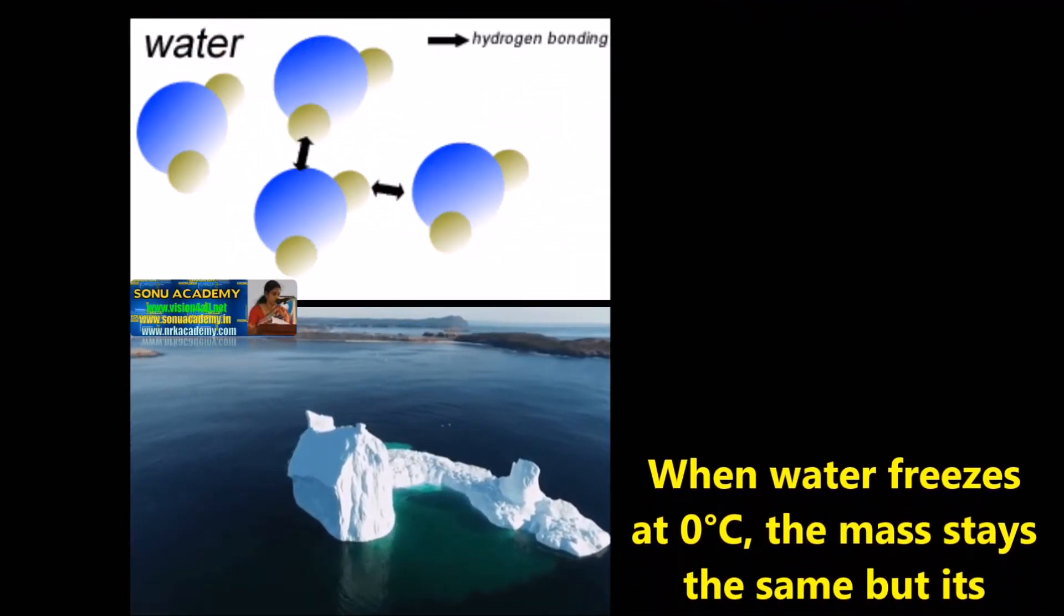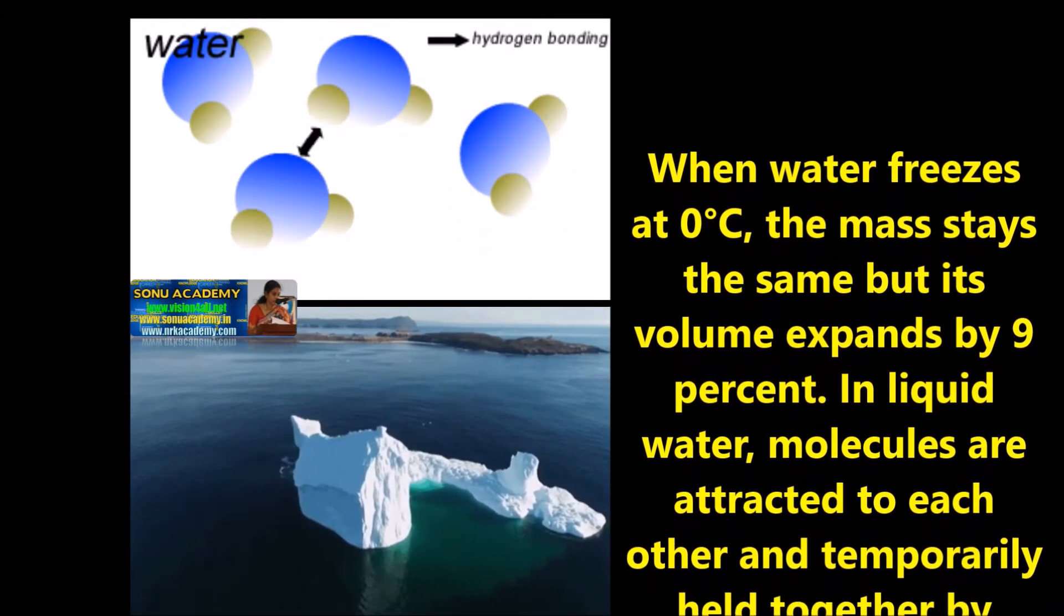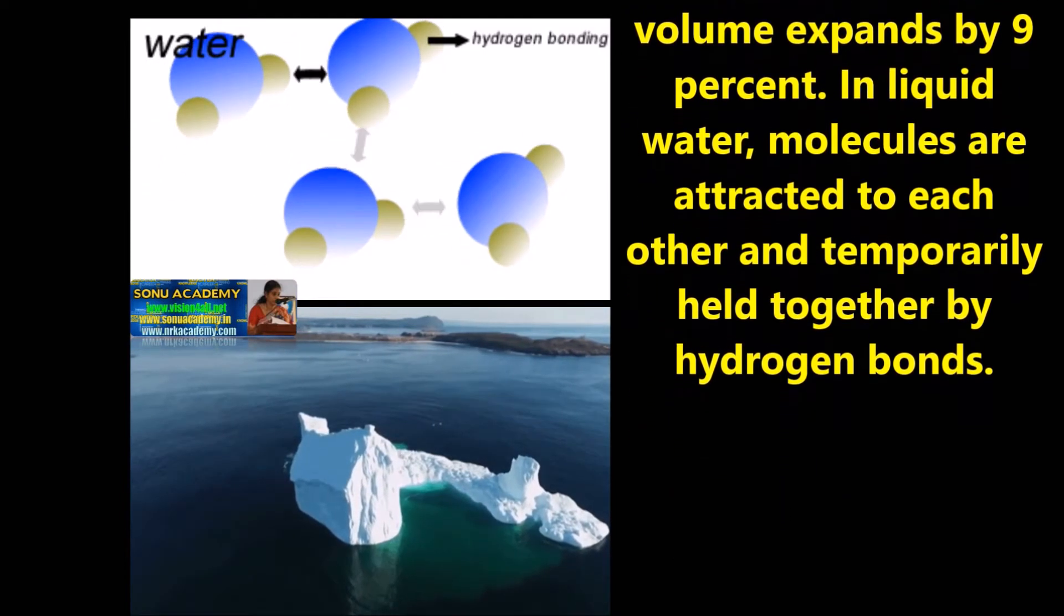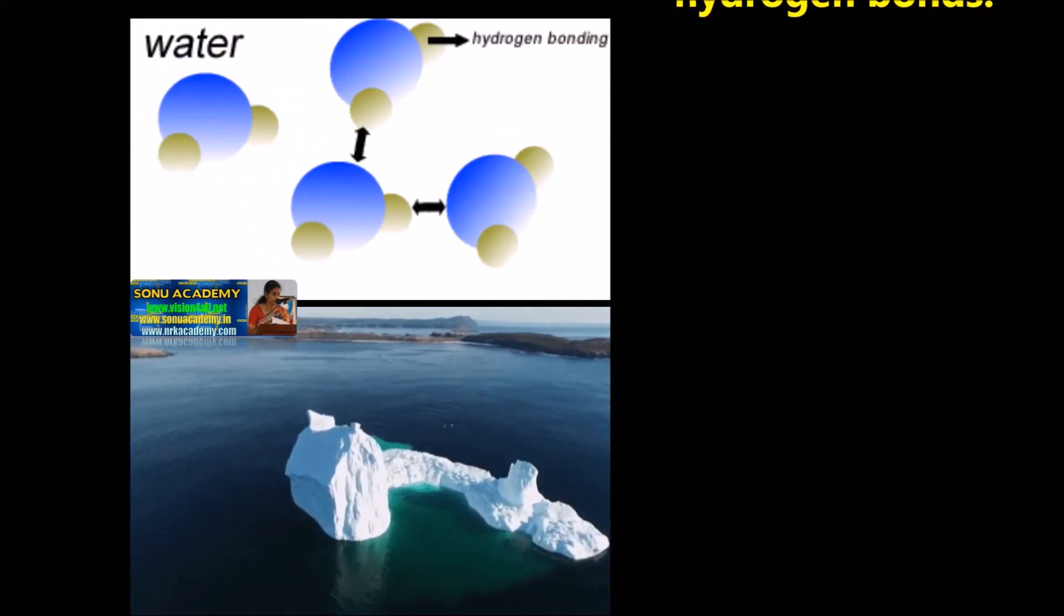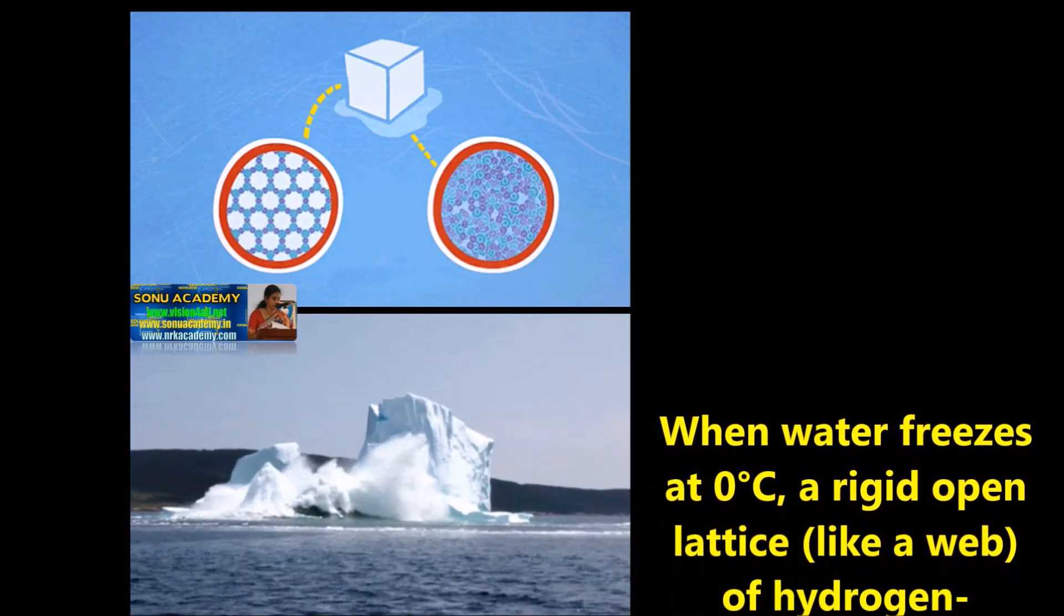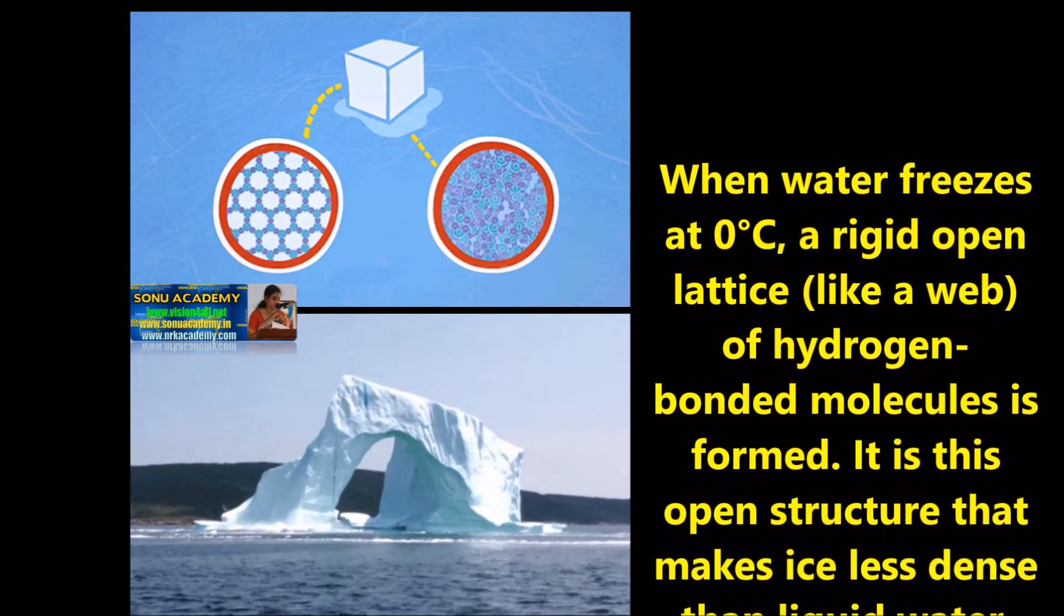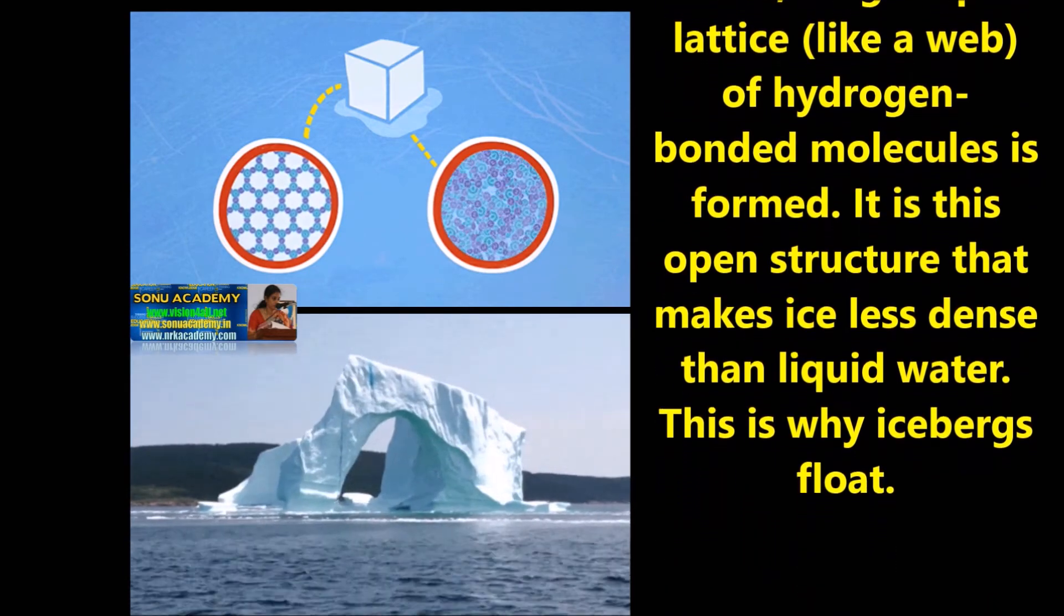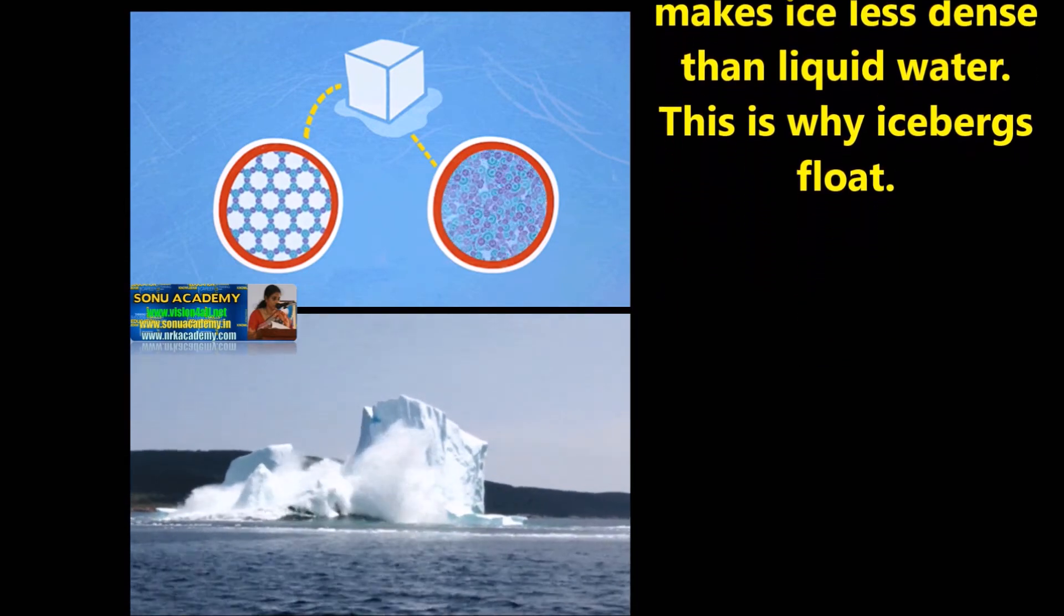When water freezes at 0 degrees centigrade, the mass stays the same but its volume expands by 9 percent. In liquid water, molecules are attracted to each other and temporarily held together by hydrogen bonds. When water freezes at 0 degrees centigrade, a rigid open web-like network of hydrogen bond molecules is formed. It is this open structure that makes ice less dense than liquid water. This is why icebergs float.